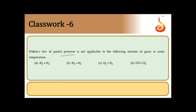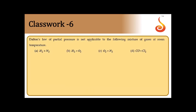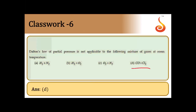Question 6: Dalton's law of partial pressure is not applicable to which mixture of gases at room temperature? Dalton's law cannot be applied to chemically reacting gases. Among the options, CO and Cl2 directly combine to give COCl2 gas — they react immediately when mixed. So Dalton's law cannot be applied to a mixture of CO and Cl2. Answer is option D.